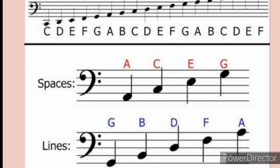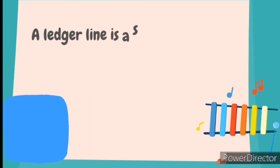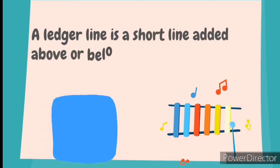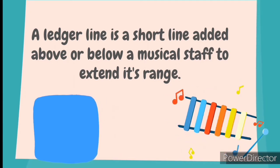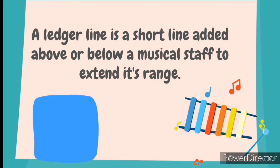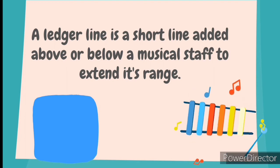Now let's look at what a ledger line is. A ledger line is a short line added above or below a musical staff to extend its range.